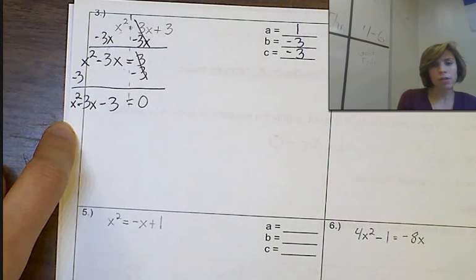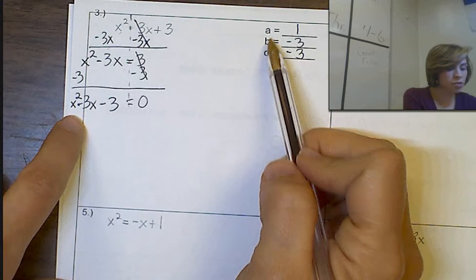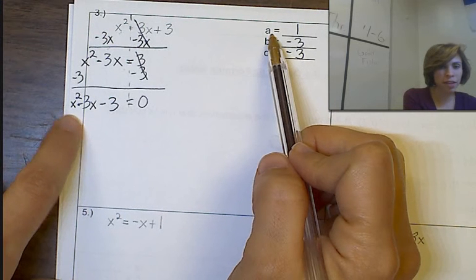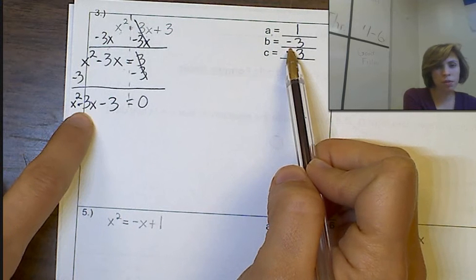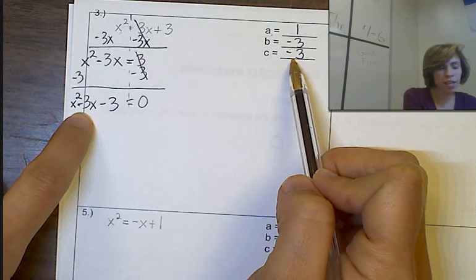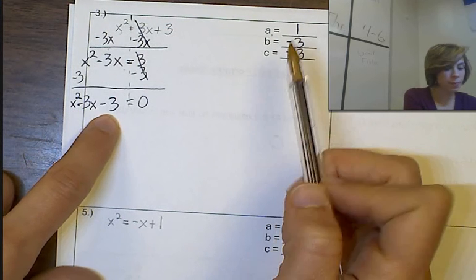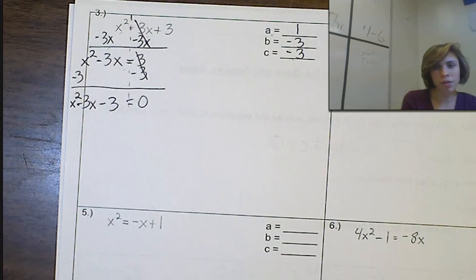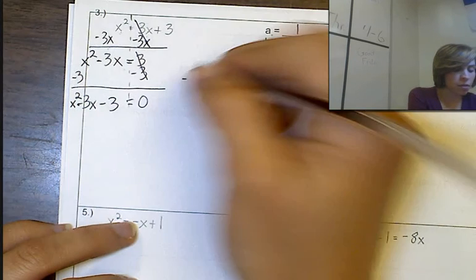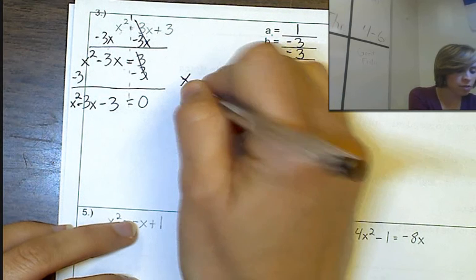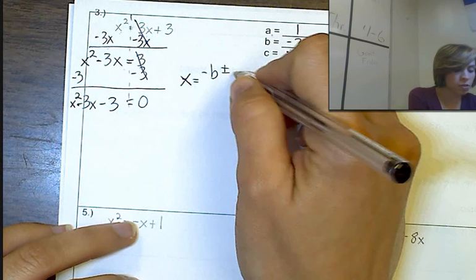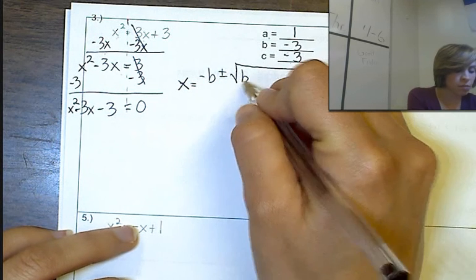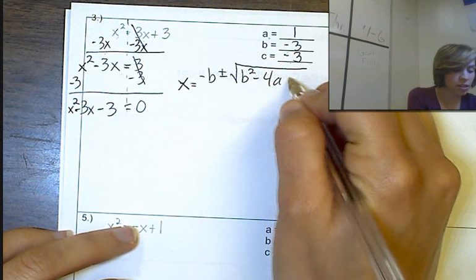All right. So a, just to let you know, a is that number that's always in front of the variable that's squared. b is always that number that's in front of the variable to the power of 1, and c is that number that's just by itself. Okay. So we've got our a, our b, and our c. So we're going to go ahead and do the quadratic formula. So we have x equals negative b plus or minus square root of b squared minus 4ac over 2a.